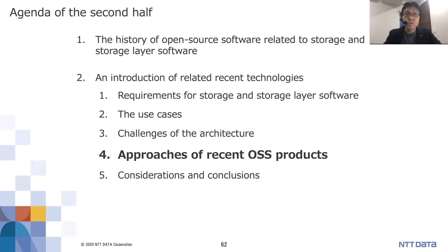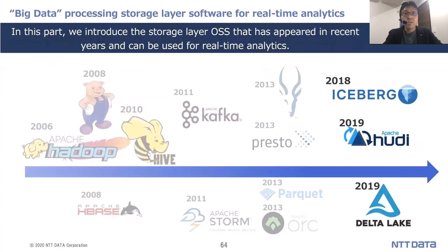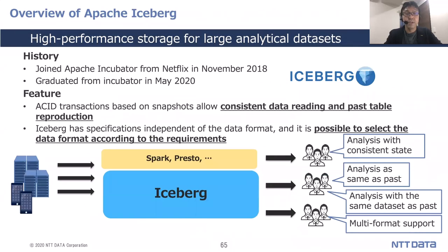Next, I introduce recent storage layer open-source software for real-time analytics. As explained in the first half, the world is full of old and new products that can process big data, and there are many products not listed here. Even so, we need to select the proper products. As recent storage layer OSS products for real-time analytics, I would like to briefly introduce Apache Iceberg, Apache Hoodie, and Delta Lake.